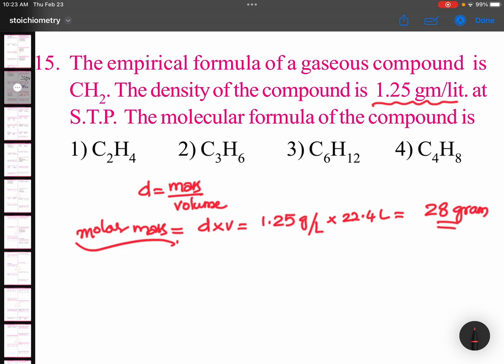And empirical formula is CH2. So empirical formula mass will be 12 for carbon, 2 for hydrogen. Two hydrogens are 2. So 14.